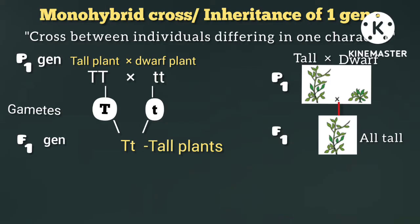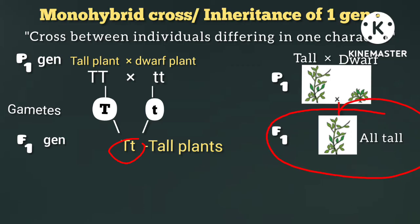What is the result of the F1 generation? All of them are tall plants. Their genotype is capital T and small t (Tt) — a diploid plant. The phenotype is tall plants; all F1 plants are tall.